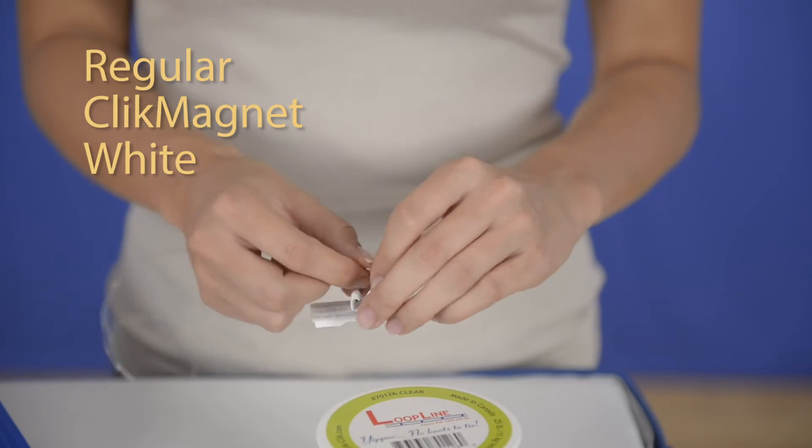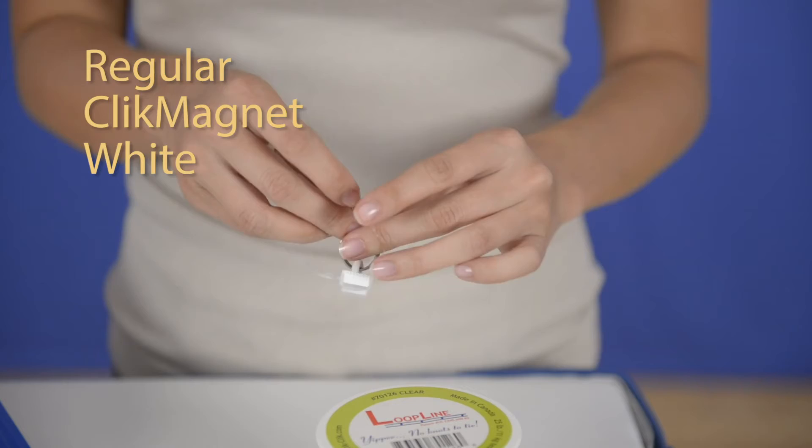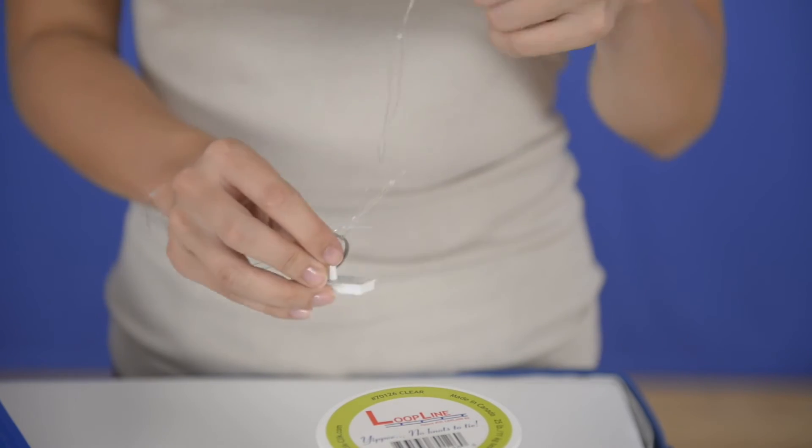Attach the loop line to a click magnet by feeding the loop line through the ring and the other end through the first loop.